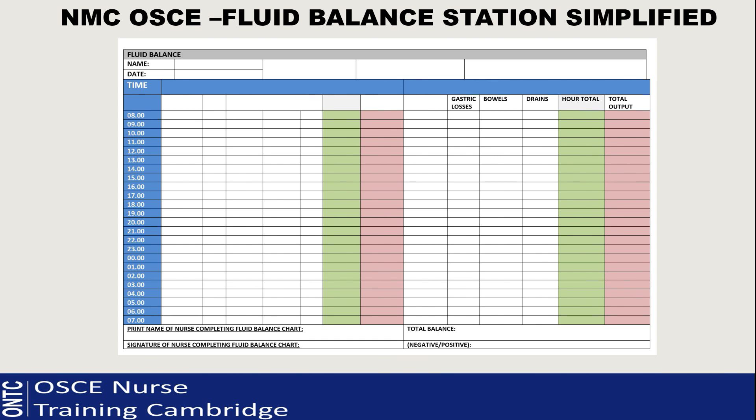Going back to the fluid balance chart - what do you see on it? There is the intake side and the output side. The patient details are at the top, then the intake side, the output side, and then you can see the time column in blue. That time column represents the 24-hour period, with boxes for 8 o'clock, 9 o'clock, 10 o'clock, 11, 12, and so on.